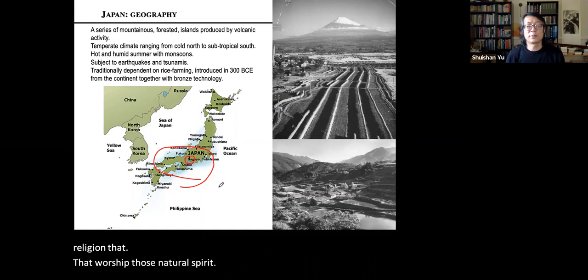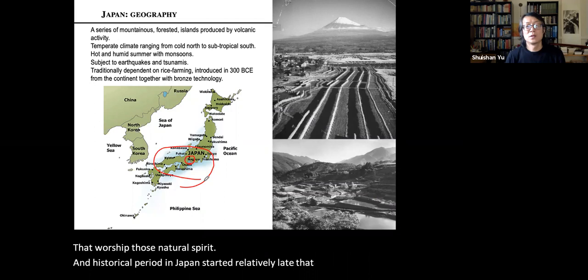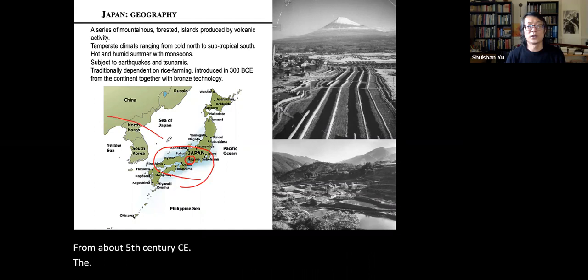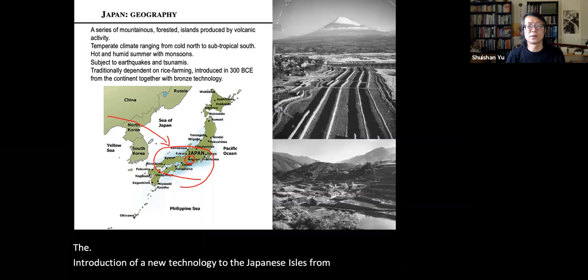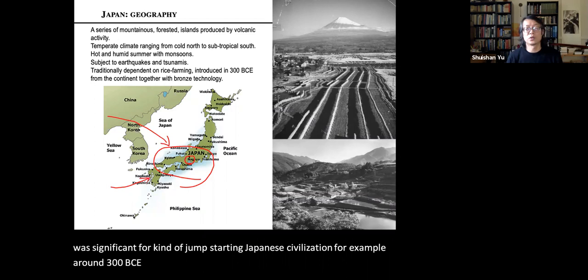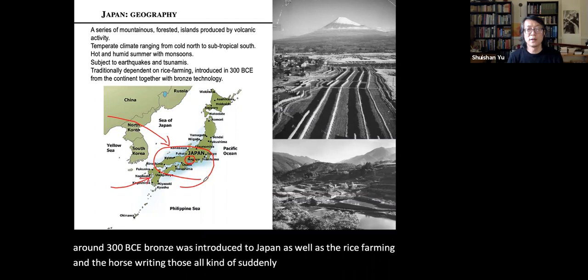The historical period in Japan started relatively late, from about the 5th century CE. The introduction of new technology to the Japanese Isles from the continent was significant for jump-starting Japanese civilization. For example, around 300 BCE, bronze was introduced to Japan, as well as rice farming and horse riding.